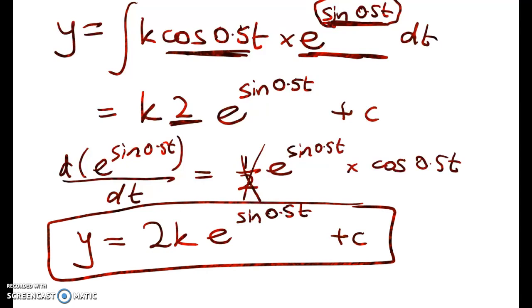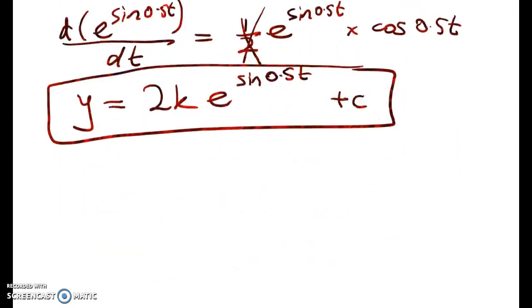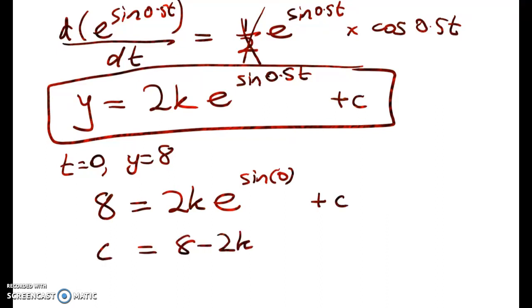Now it's just a matter of slowly and carefully going through and substituting in the values that we've got. So the first one is that when t is 0, y is 8. We get 8 equals 2k e to the sine of 0 plus c. So c is equal to 8 minus 2k.